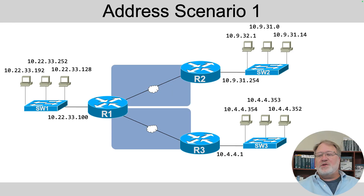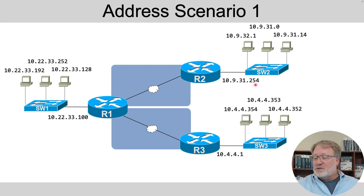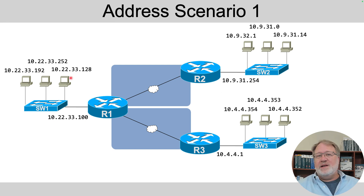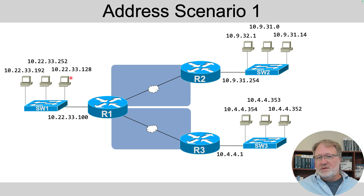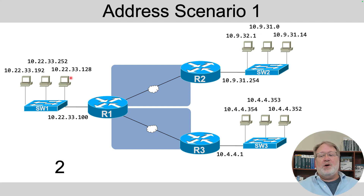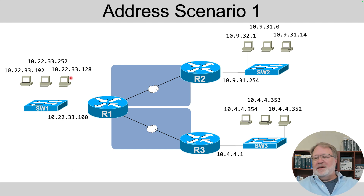Here's your first scenario. The addresses near the routers are the router addresses, and the ones near the PCs are the PC addresses. Look at the numbers and come up with any that are rule breakers. I'll give you five seconds to hit pause so you can ponder it before I keep going.